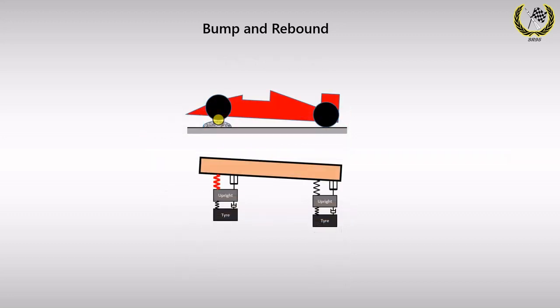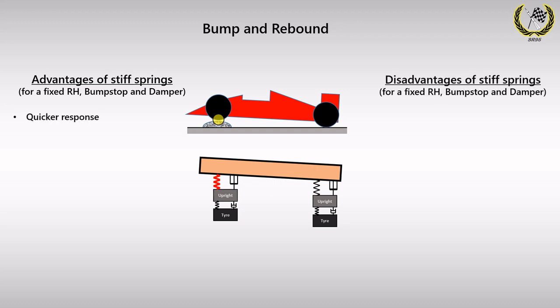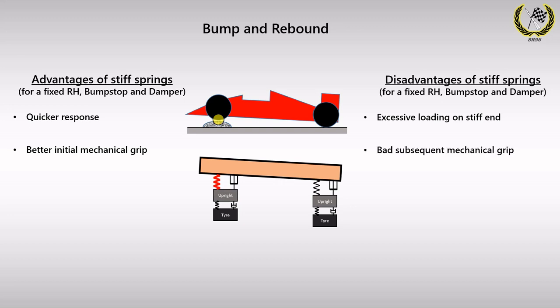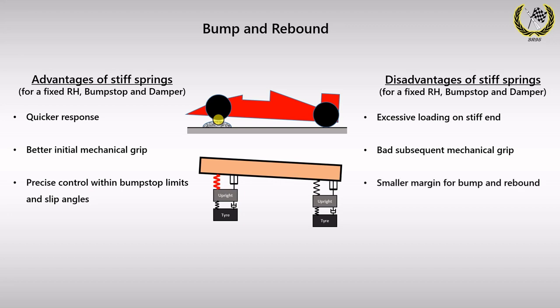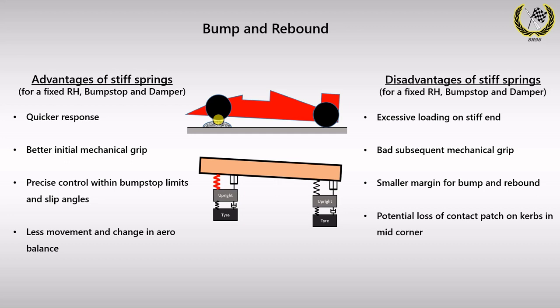Having stiff springs has several advantages as well as a fair share of repercussions. Firstly, such setups have a higher rate of response since the load transfer happens at a higher rate, giving a driver quicker feedback. On the other hand, this also excessively loads the stiffer end of the car, leading to either a front end grip loss giving understeer or a rear end loss giving oversteer. Stiff springs also have better initial mechanical grip. However, as the car continues through a corner or hits a curb, if the bump stops are too large or stiff, there can be a loss in mechanical grip. From an aero perspective, a stiff setup reduces the amount of pitch and to an extent roll as well, thereby keeping the relative angle between the floorboard and the ground to a minimum. This can be a disadvantage at curbs and dips where the floorboard may either completely move away or entirely scrape on the ground depending on the driver.